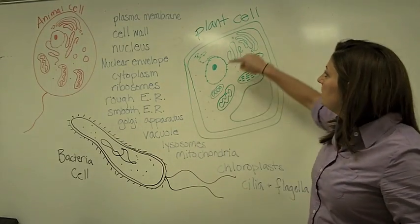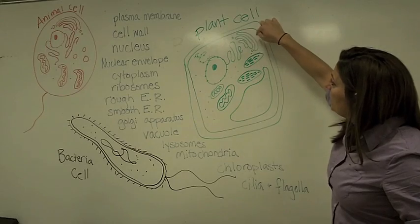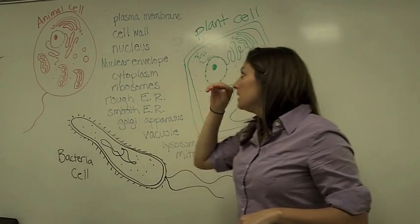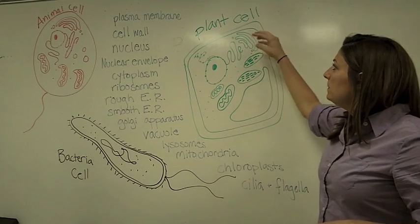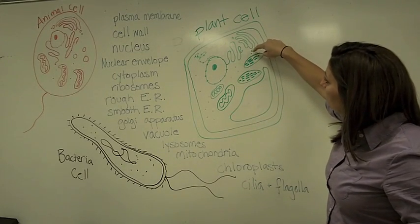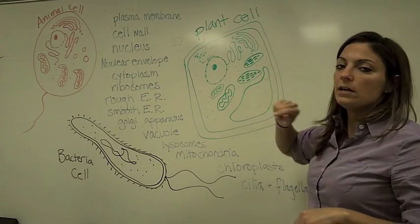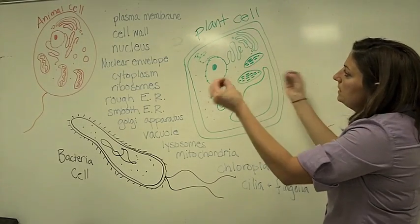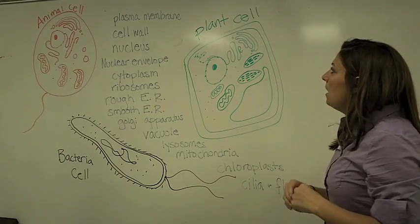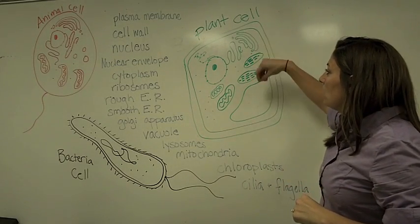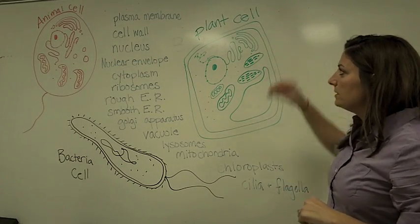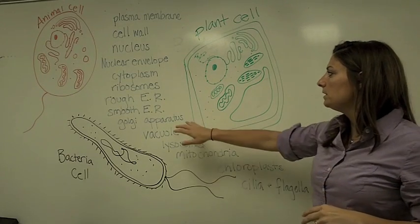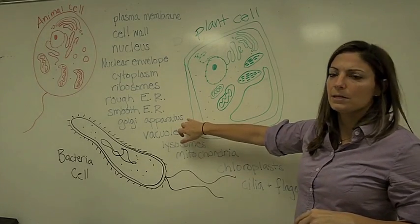The Golgi apparatus looks like kind of flattened discs. Again, this is only in animal cells and plant cells. What it does is it packages things up. You see little circles at the end of it — those are vesicles. So the Golgi apparatus takes things in, packages them up, and sends them out in vesicles, sometimes to other parts of the cell but usually outside of the cell. You might also hear it called the Golgi complex.